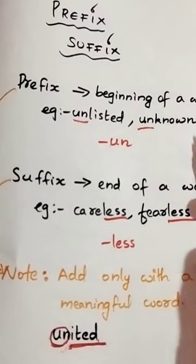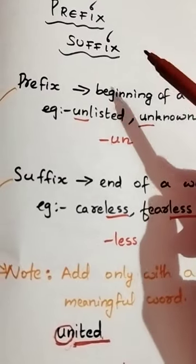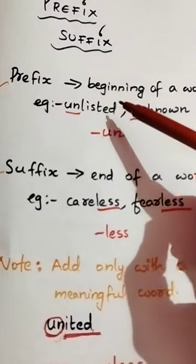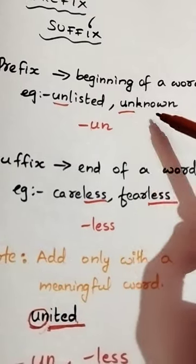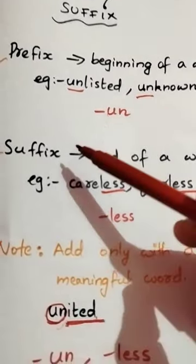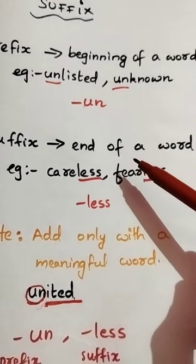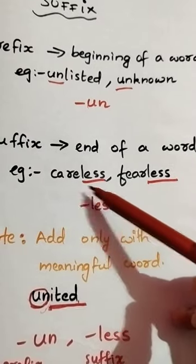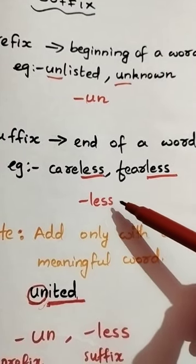The topic of this video is prefix and suffix. A prefix is a part added to the beginning of a word. For example, 'unlisted' and 'unknown' — here 'UN' is the prefix. A suffix is a part added to the end of a word. For example, 'careless' and 'fearless' — here 'LESS' is the suffix.